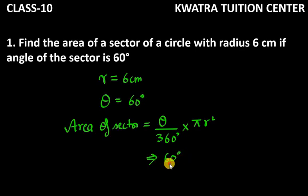So theta is 60, we have 360. Pi can be written as 22 over 7, and r square is 6 square.